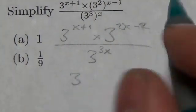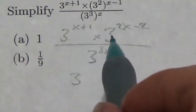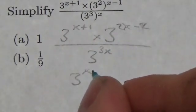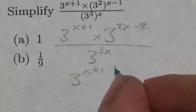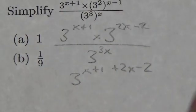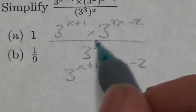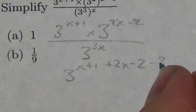Now, I can put this all together, because remember, when I multiply powers, I'm going to add exponents. This is going to be 3 to the x plus 1 plus 2x minus 2. And then when you divide by the power, you subtract its exponents, so negative 3x.